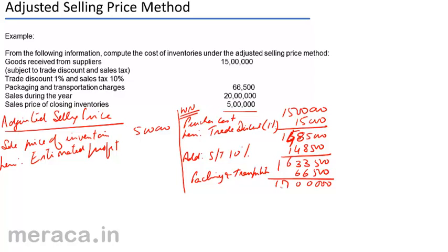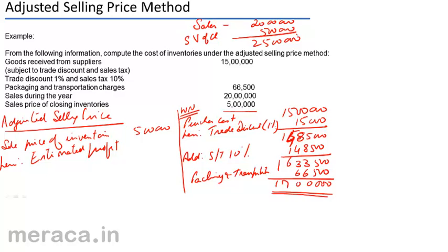Sales during the year is 20 lakhs and there is a closing stock of 5 lakhs. If all the goods purchased were sold, the total sales value would be: actual sales of 20 lakhs plus the sales value of closing inventory of 5 lakhs, giving a total value of 25 lakhs. Comparing the sale value of the entire lot with the purchase cost of 17 lakhs, we get a profit of 8 lakhs.